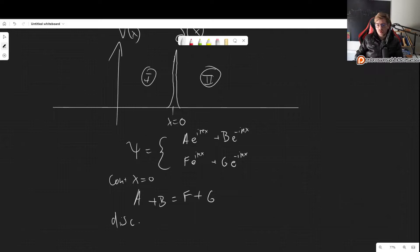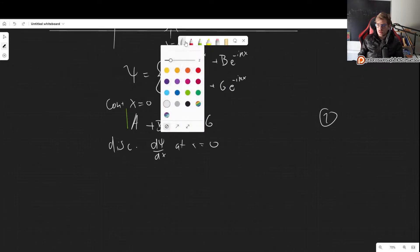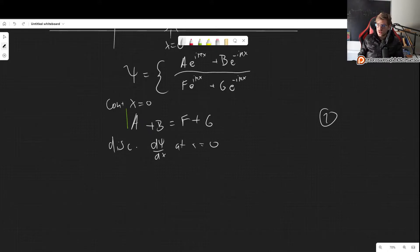So continuity at x equals 0 gives us that A + B has to be F + G. And then the discontinuity, I'm going to go quickly over this because we have done this before. If you need more detail, then go back through my playlist and take a look at the videos where we discuss the delta potential. So the discontinuity of the derivative at x equals 0, so this we have already done. So I will go a little bit faster. So we need to take the derivative of this part.